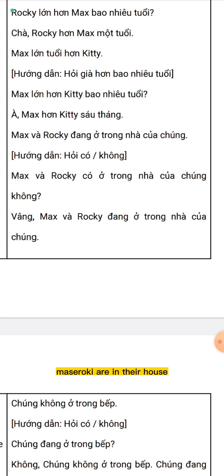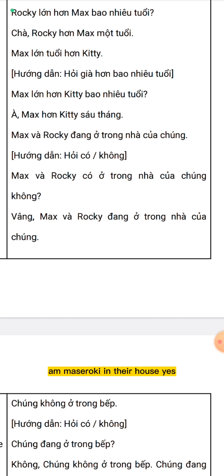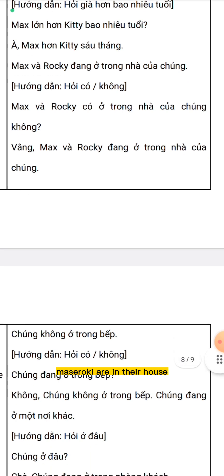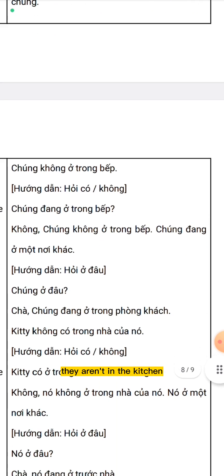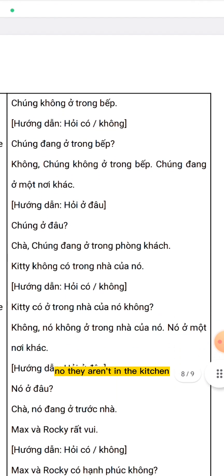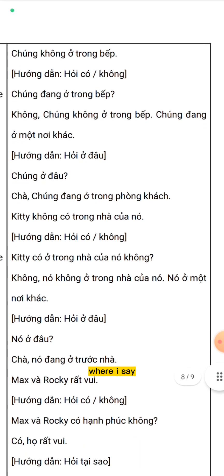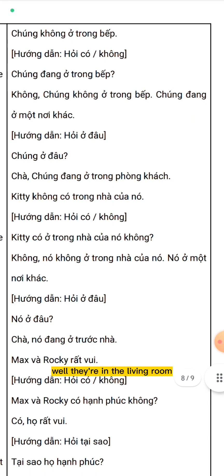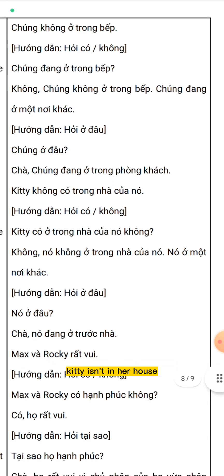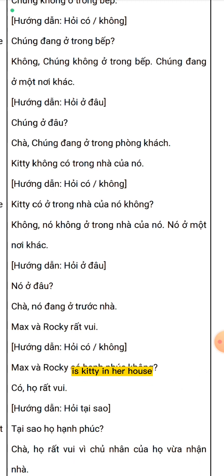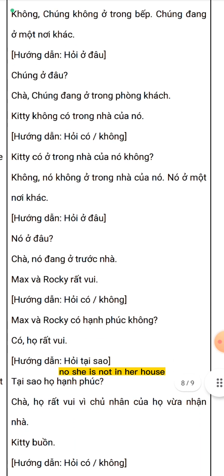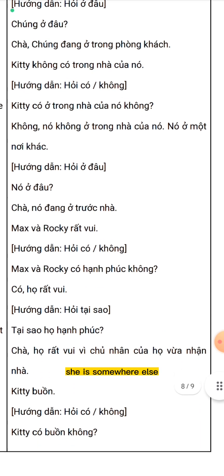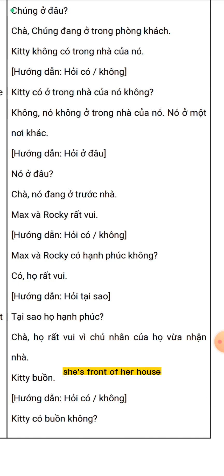Max and Roki are in their house. Are Max and Roki in their house? Yes, Max and Roki are in their house. They aren't in the kitchen. Are they in the kitchen? No, they aren't in the kitchen — they are somewhere else. Where are they? Well, they are in the living room. Kitty isn't in her house. Is Kitty in her house? No, she is not in her house — she is somewhere else. Where is she? She is in front of her house.